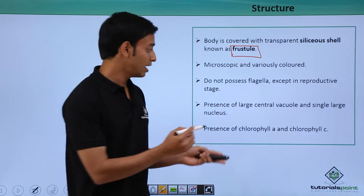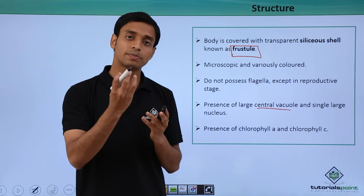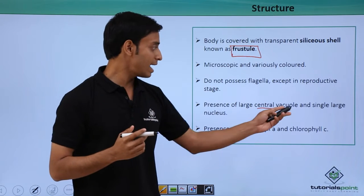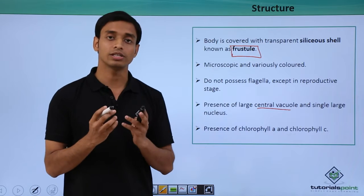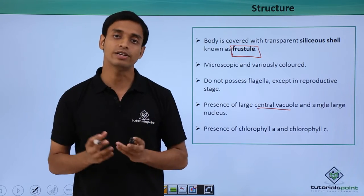They have a large central vacuole - the vacuole is large and centrally located in the cell - and a single large nucleus. The nucleus is also large along with the presence of a large central vacuole.